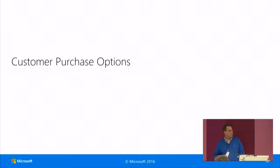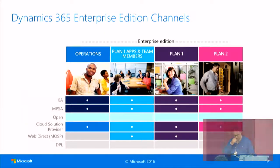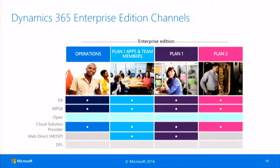Talking about customer purchase options: there are only three ways to actually purchase Dynamics 365 for Operations. That's Enterprise Agreement, MPSA, and Cloud Solution Provider — CSP. There is no Dynamics price list. There is no Open licensing. WebDirect only works for Plan One for the CRM side. These are the only options.